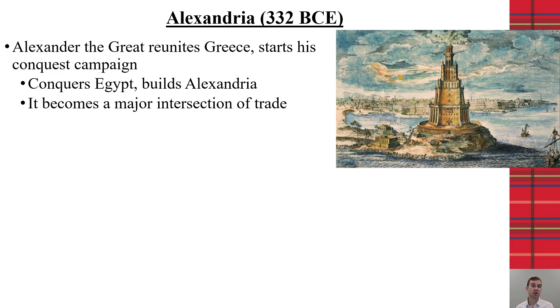As he would go along, he would build major cities in the areas that he conquered. In Egypt, that was the city of Alexandria, and this became a very prominent city because it became a major intersection for trade at that time.